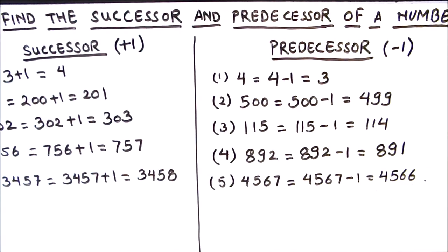And the last number is 4567, and the predecessor is 4566. This is all about successor and predecessor.